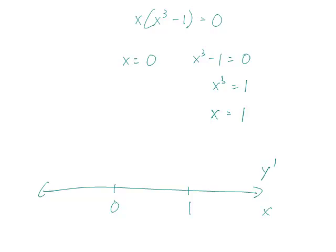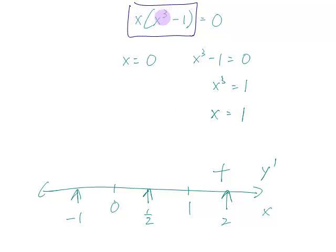Let's plug some numbers in — say 2, one half, and minus 1 — and remember we only need to plug them back into the factored form, which differs from y prime by a factor of 10. Since 10 is positive, it won't change the sign. Plugging in 2 gives 2 times 7, that's positive. Plugging in one half gives one half times (one eighth minus 1), which is negative. Plugging in minus 1 gives negative times negative, that's positive.